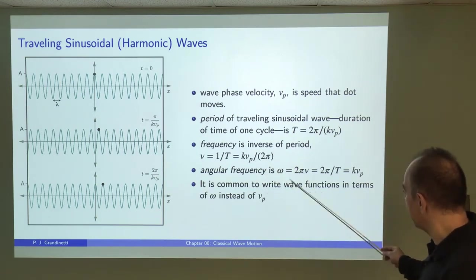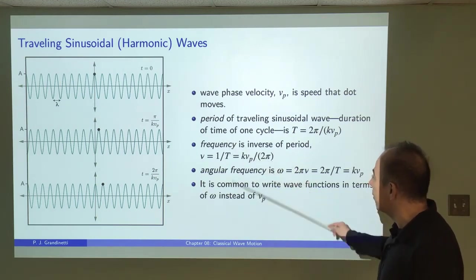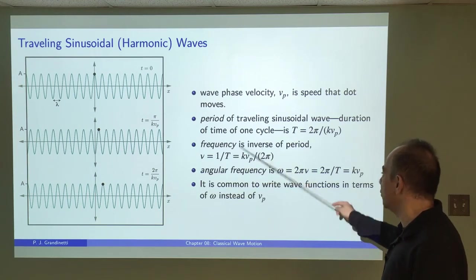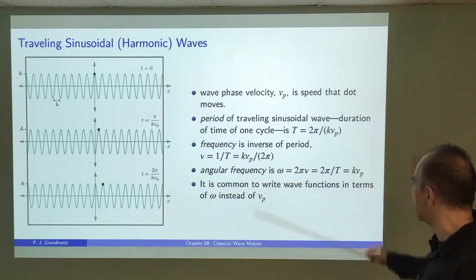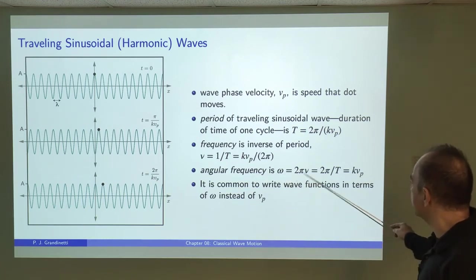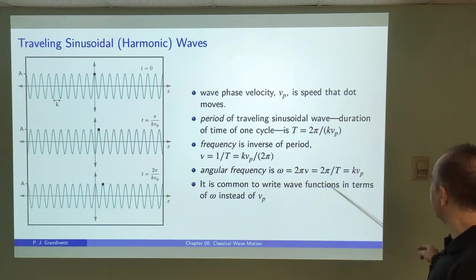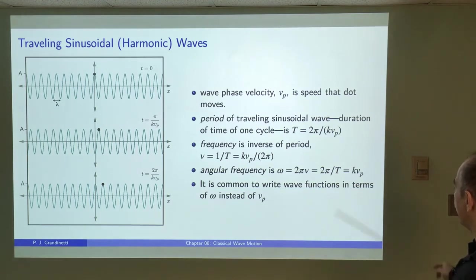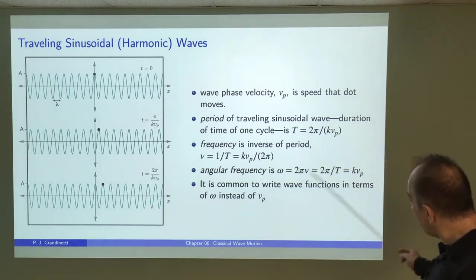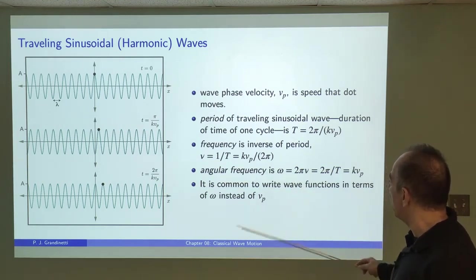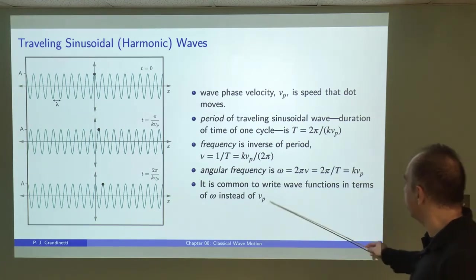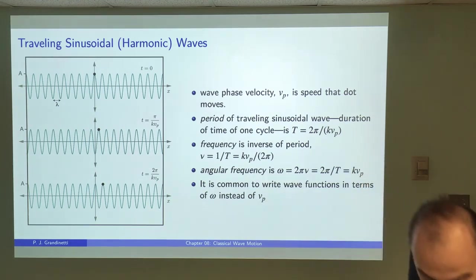The angular frequency is ω = 2π·ν = 2π over T = k·vp. It's going to be more common for us to rewrite our wave function in terms of ω instead of vp, so let's do that.